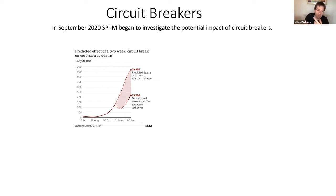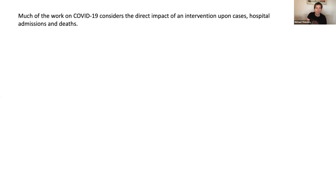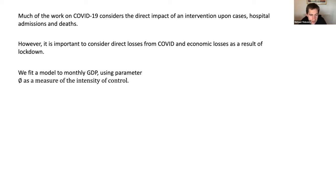If you put in a circuit breaker that reduces the R number below one, theoretically it should turn things down, but when you release the circuit breaker cases move up again. You can see the decay rates when the circuit breaker comes in — the more severe the circuit breaker, the bigger the impact in terms of reducing hospitalizations per day, but then when you release it, it goes back up again. The key point is the effectiveness of the circuit breaker is dependent upon the objective. Much of the work we have done thinks about the direct impact of an intervention upon cases, hospital admissions, and deaths, but interventions are also harmful — there are other losses associated with those.